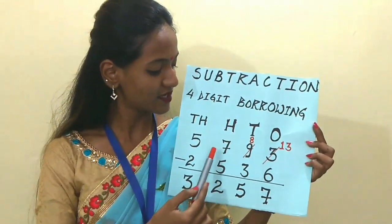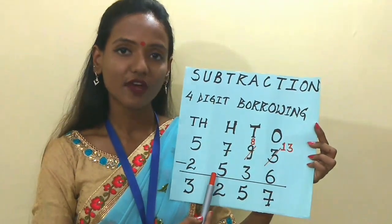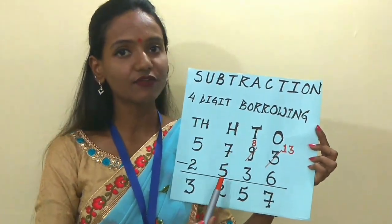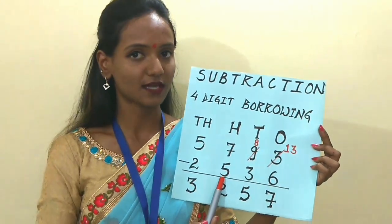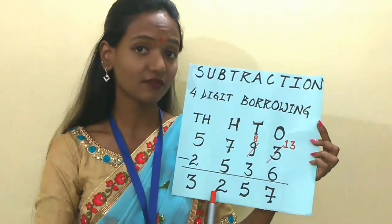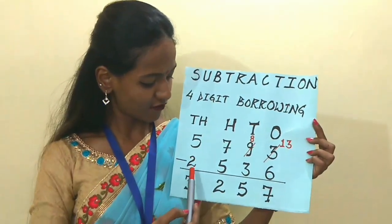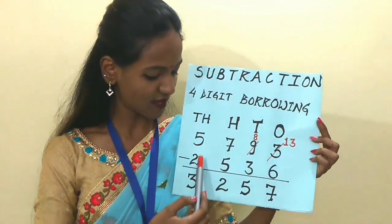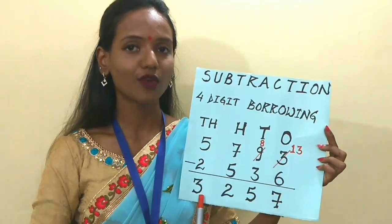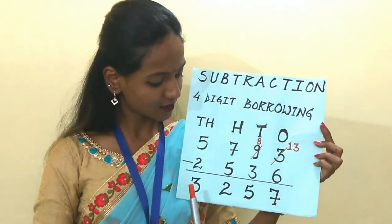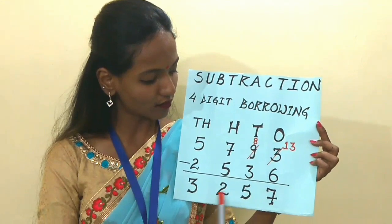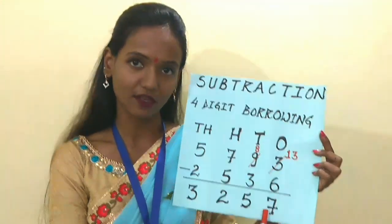In the 100s place we have 7 and 5. 7 is bigger than 5, so we can clearly subtract it. 7 minus 5, we get 2. In the 1000s place: 5 minus 2. What is 5 minus 2? 3. Very good children. So what is the answer? 3,257. Today we studied subtraction with 4-digit numbers and borrowing.